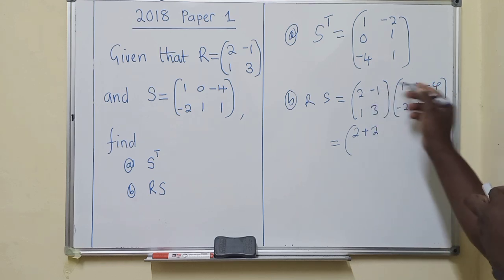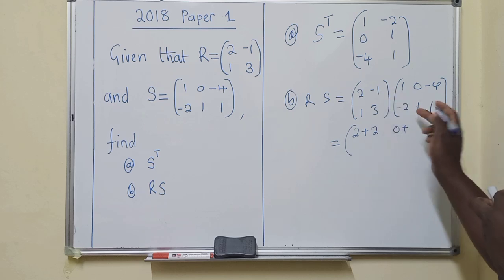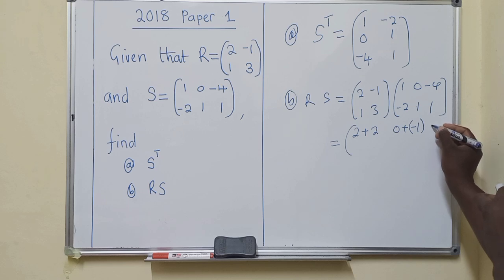Next, 2 multiplied by 0 is 0, plus 2 multiplied by negative, I mean negative 1 multiplied by 1, it's equals to negative 1. Here we have negative 8, because 2 by negative 4 is negative 8.